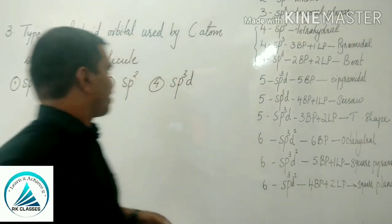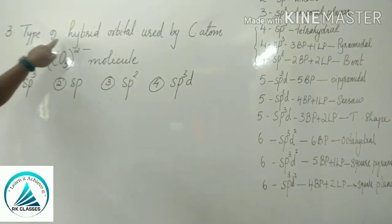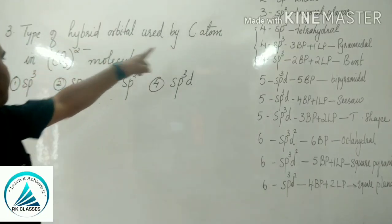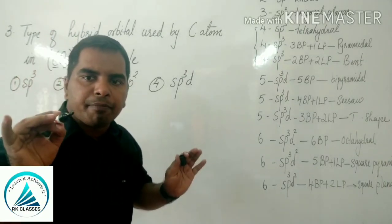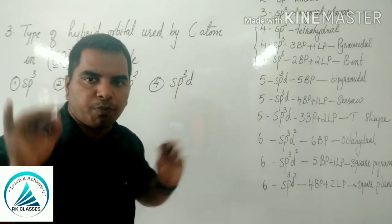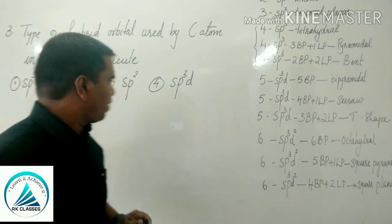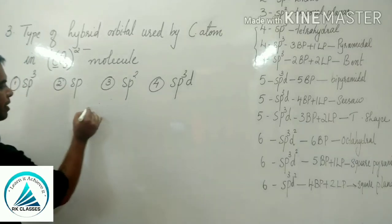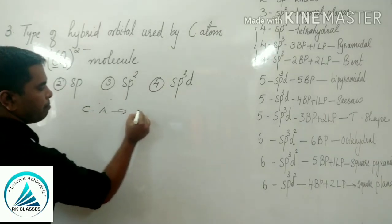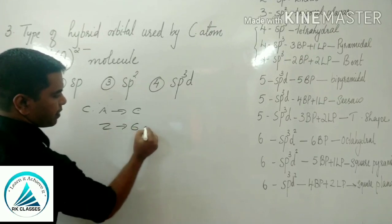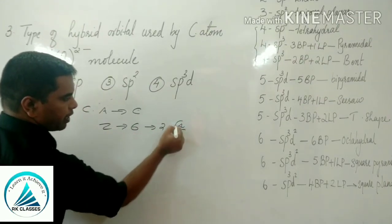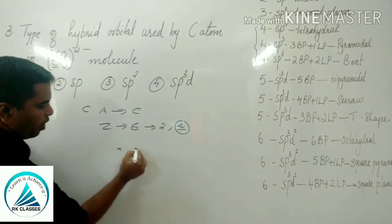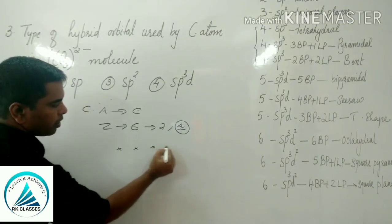Third question: what is the type of hybrid orbital used by the carbon atom in CO3 2- molecule? The central atom is carbon, atomic number 6, electronic configuration 2,4 — so 4 electrons in its valence shell: 1, 2, 3, 4.